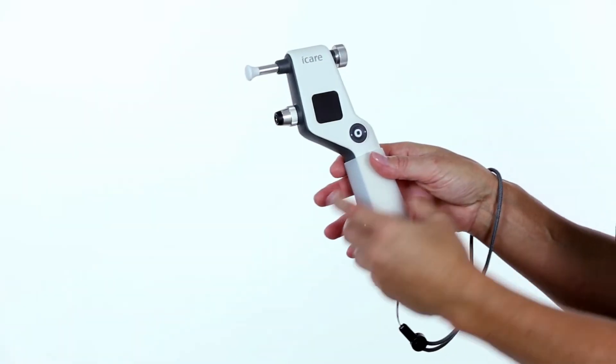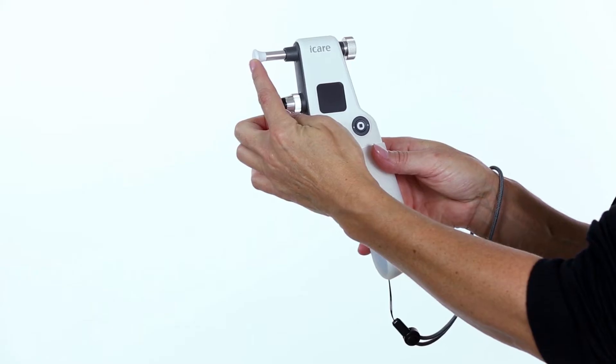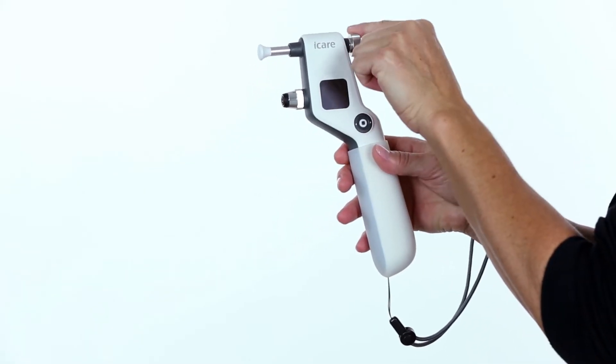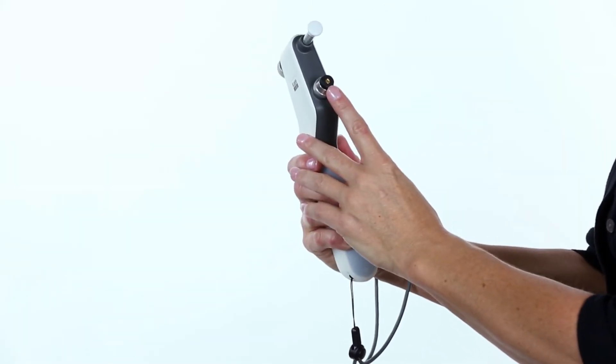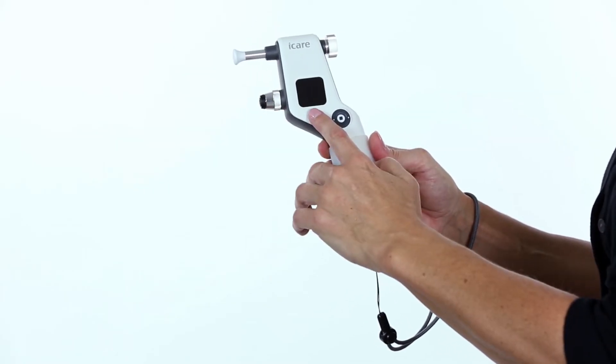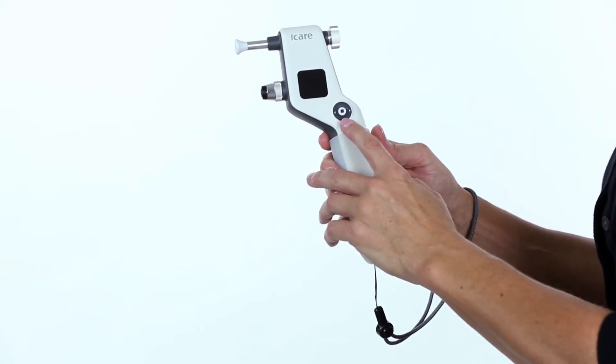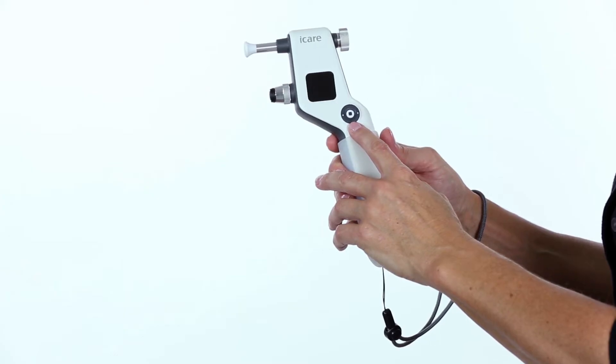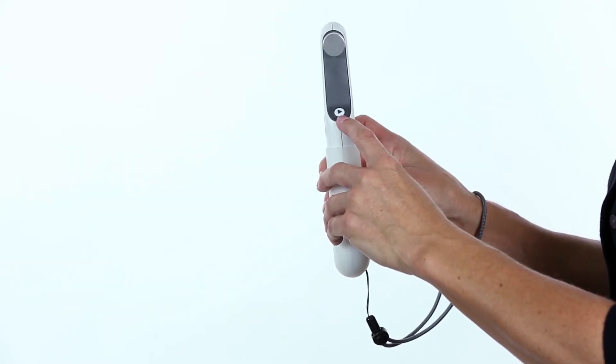Parts of the IC-100: This is the forehead support, forehead support adjusting wheel, probe base and collar, display, select a navigation button, and the measure button.